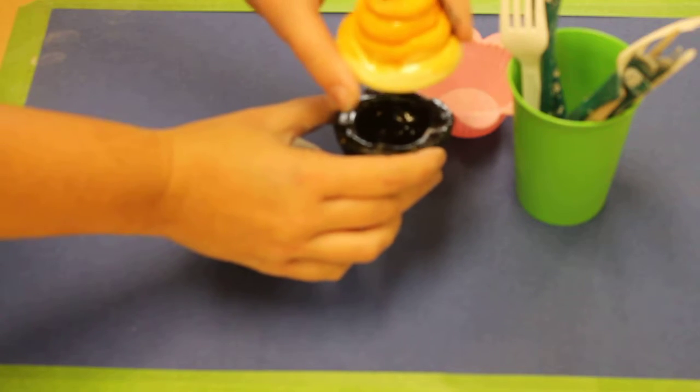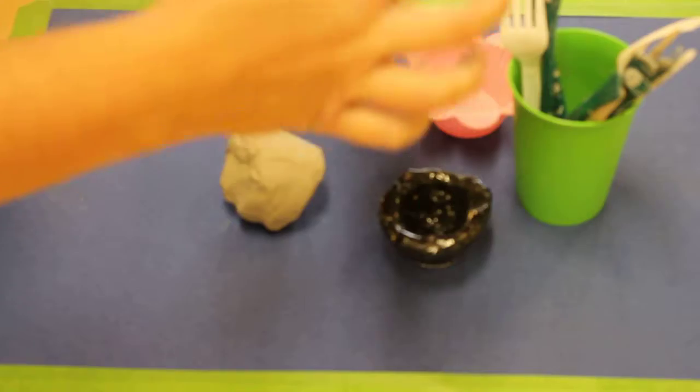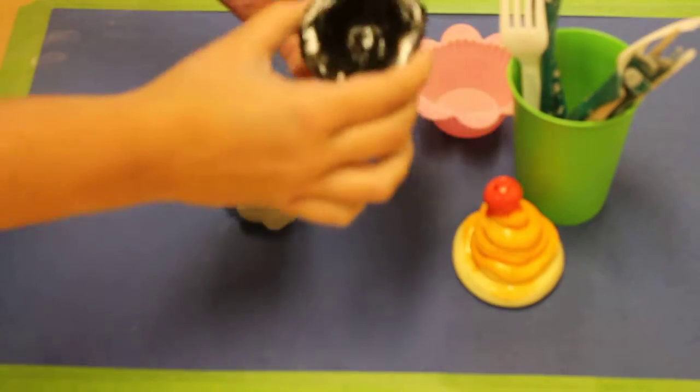Later on I'll show you how to make the top out of a coil pot. We'll smooth the inside out and add a little cherry on top. Right now we're going to focus on the base.